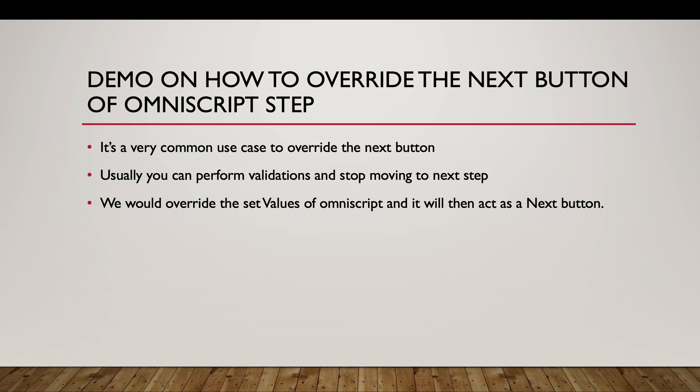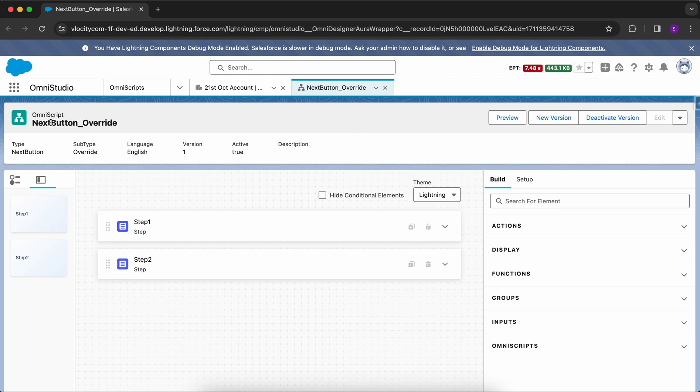We will see a demo on how to override the next button of an OmniScript step. It's a very common use case — sometimes we have to perform validations and stop the user from moving to the next step if those validations fail. We would override the Set Values element of OmniScript, which acts as the next button when dragged into a step, and then perform our necessary validations before the user can move forward.